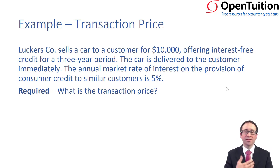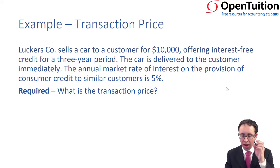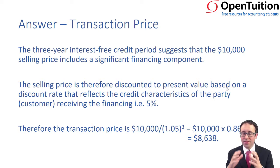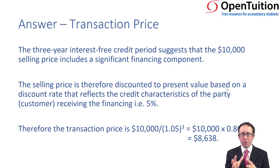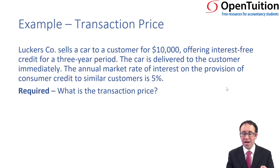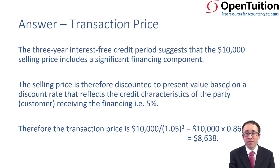We're told the market rate of interest on the provision of consumer credit to similar customers is five percent. So if this customer was to go out and borrow ten thousand to buy this car, they would be charged five percent. What we need to do is work out what belongs to each element. The three-year interest-free arrangement suggests that the ten thousand dollars involves a financing component, because if you were to pay today you'd pay a lot less. So we know we're going to receive ten thousand in three years and we discount that back to present value at five percent.